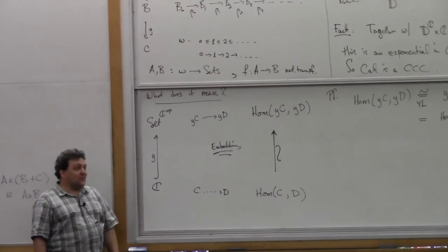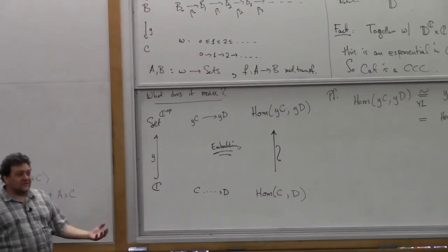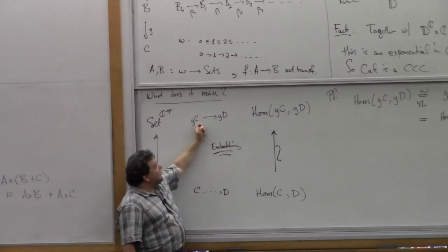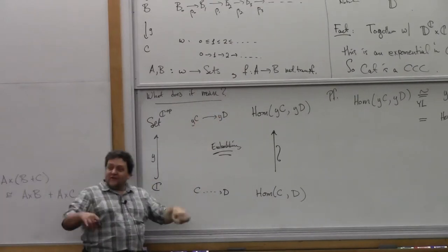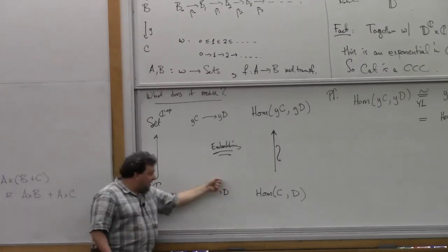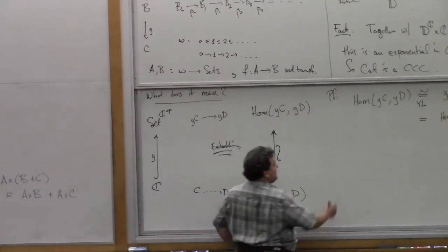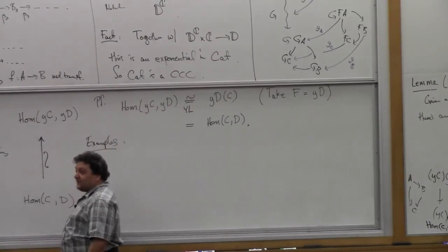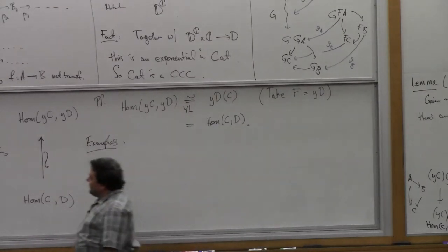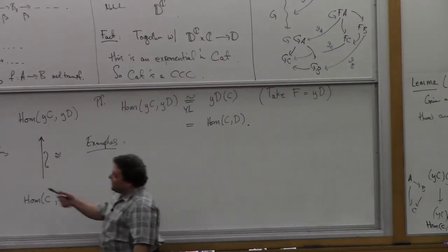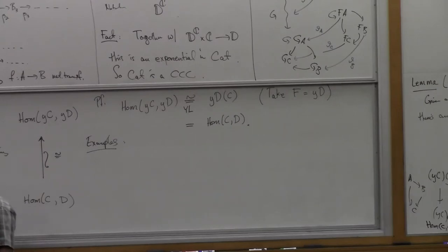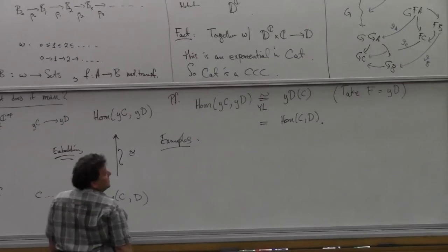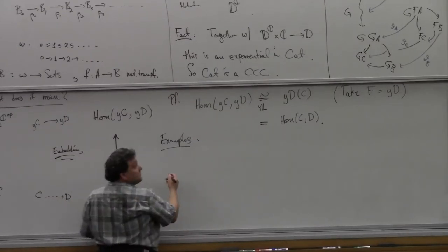That's exactly saying the map taking arrows from below to arrows above — from Hom(C,D) to Hom(Y(C), Y(D)) — is a bijection. That's what it means to be an embedding: it's injective on objects, separates objects, and that's true. It follows in two lines from the Yoneda Lemma. Proof: consider Hom(Y(C), Y(D)) — this has the form Hom(Y(C), F) for F = Y(D). Apply the Yoneda Lemma to get Y(D)(C), but by definition Y(D)(C) = Hom(C, D).